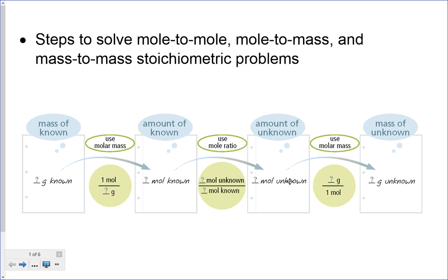Then we do our mole-to-mole conversion to figure out how many moles of whatever it is we're trying to find. And then if we want the answer in grams, we have to do one more conversion to change those moles back to grams. A lot of chemistry problems start with grams and end in grams, so you're going to do three conversions. The grams-to-moles and moles-to-grams at the ends are things we already know how to do — that should be in your skill set. The one in the middle comes from the balanced chemical equation.